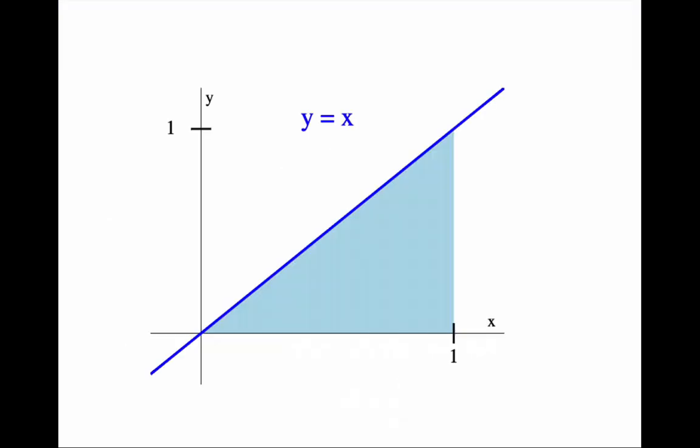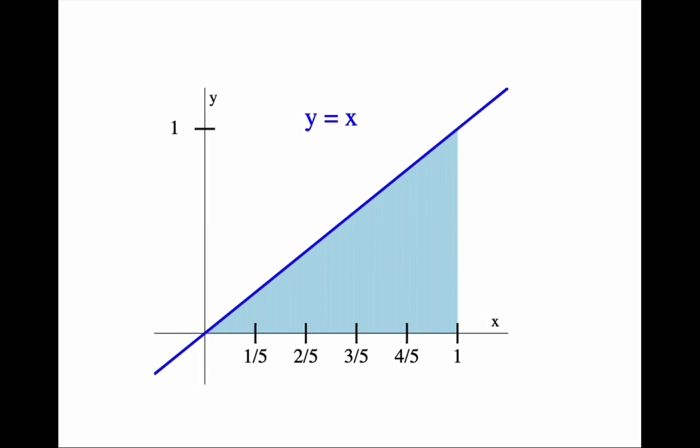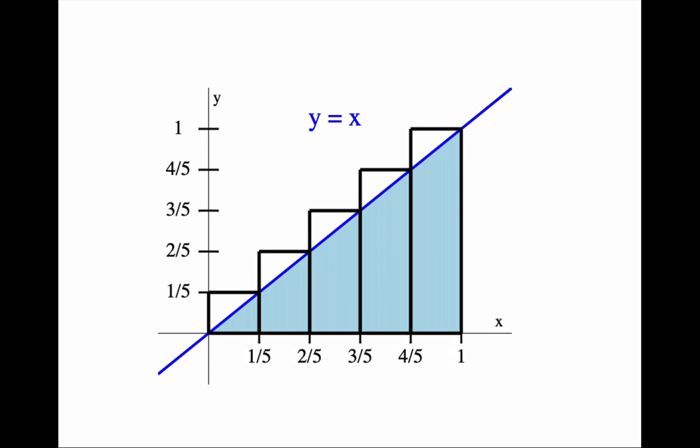Here is the graph again. As an example, I will use n equals 5. Here is the partition. And here are the rectangles. Now to compute the Riemann sum.